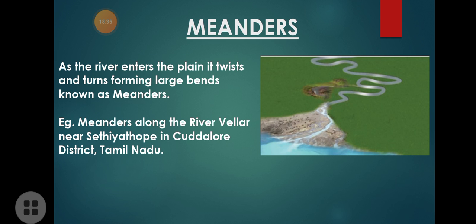Meanders are the zigzag, U-shaped bends formed by river water. When the river water enters a plain, it twists and turns forming large bends — these large bends are known as meanders. An example of a meander river in Tamil Nadu is the River Vellar near Sethiyathope in Cuddalore district.